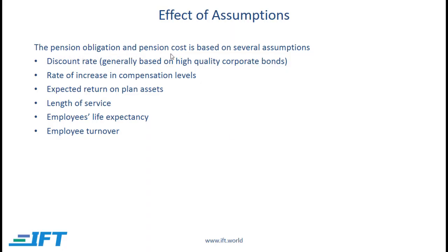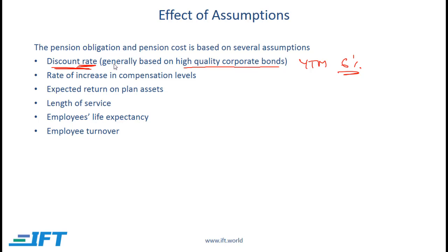The pension obligation and pension cost is based on several assumptions. The most important one is the discount rate — the rate at which we discount future obligations. This rate also helps calculate the service cost and the interest cost. The discount rate used by a company is generally based on high-quality corporate bonds. So if the YTM on high-quality corporate bonds in a given country is 6%, then this would be the rate to use in the pension calculations.